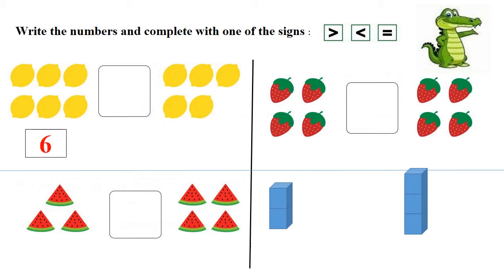One, two, three, four, five. We have here five lemons. So, Charlie the crocodile is going to open his mouth to the bigger number. So, he opens his mouth to the six because six is bigger than five.